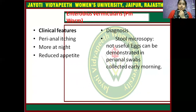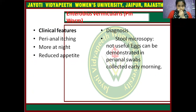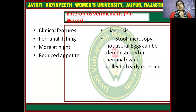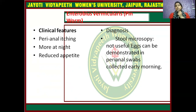Next is enterobiasis vermicularis — the pinworm. Clinical features include perianal itching, especially more at night, and reduced appetite. Diagnosis may be made by stool microscopy, though stool microscopy is not always useful for eggs; however, it may reveal the type of worm infestation present.